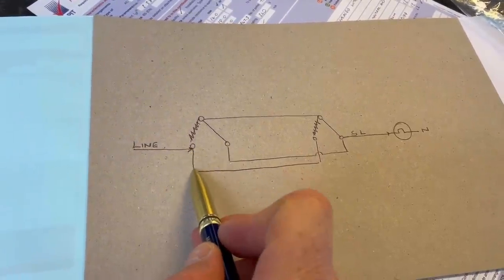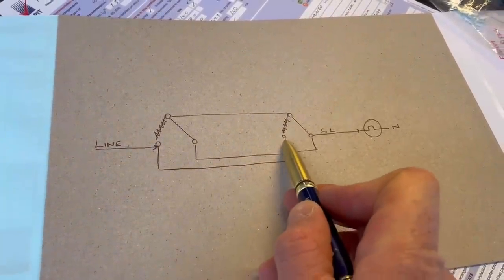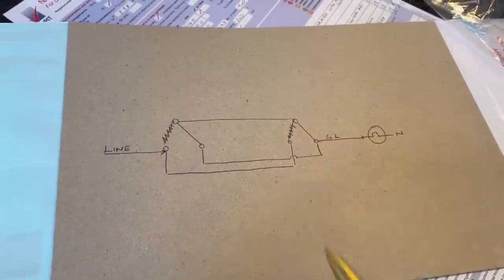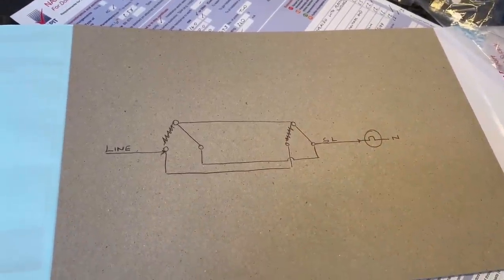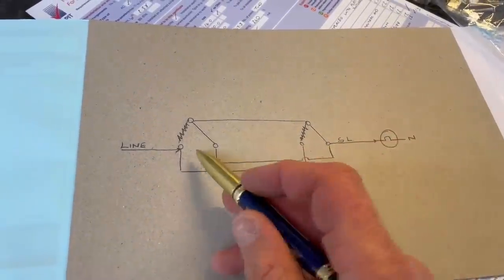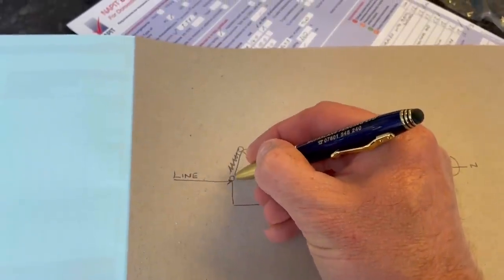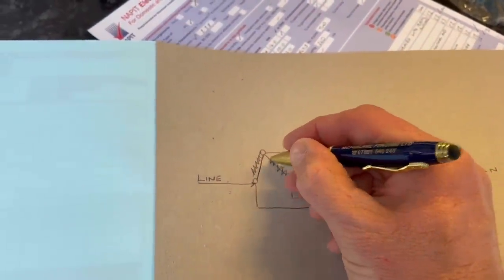So now what happens - the line conductor is here, can't go up there, comes across here to there, can't go across there, so the light therefore turns off. If we then go back to this switch and turn it on, just like I did in the video.